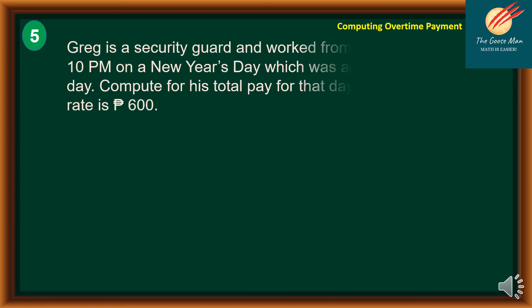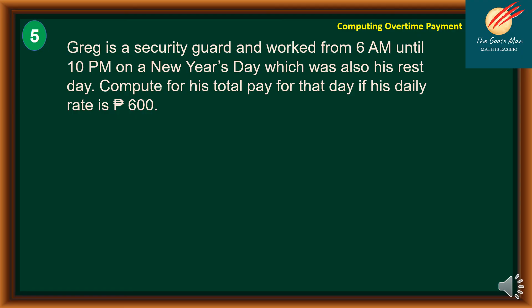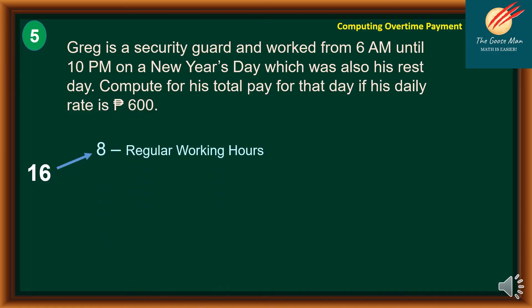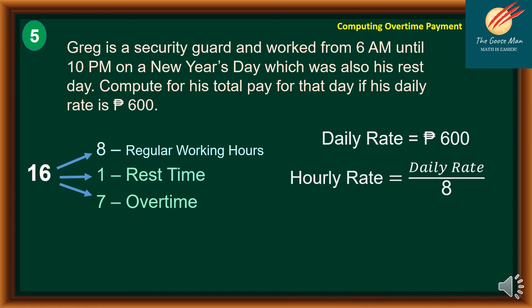For this problem: Greg is a security guard who worked from 6 a.m. until 10 p.m. on New Year's Day, which was also his rest day. Compute his total pay for that day; his daily rate is 600 pesos. New Year's Day is a regular holiday. He works 16 hours total, broken down into 8 hours of regular working hours, 1 hour of rest time, and 7 hours of overtime. The daily rate is 600 pesos and the hourly rate is 600 ÷ 8 = 75 pesos per hour.